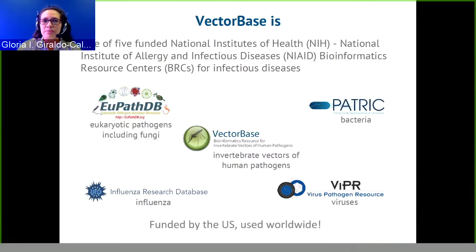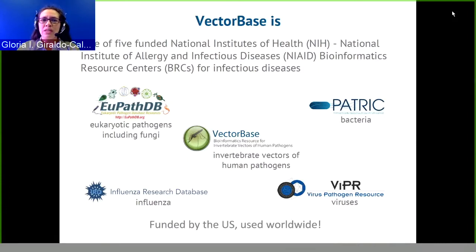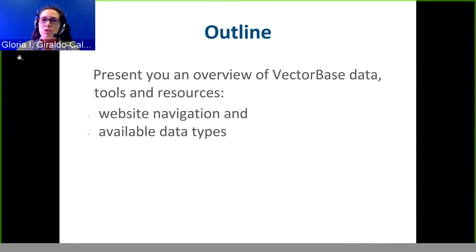VectorBase is one of five NIH NIAID BRCs for infectious diseases. The BRCs are the home of genomes, omics, and other various data types and resources. VectorBase is the home of invertebrate vectors of human pathogens. EuPathDB is the home of eukaryotic pathogens including fungi, PaTriC the home of bacteria, IRD the home of influenza viruses, and ViPR the home of other viruses. Like VectorBase, these resources are free and used worldwide. Today I'll present an overview of VectorBase data, tools, and resources — how to navigate the website and what is available.